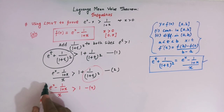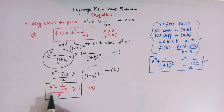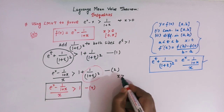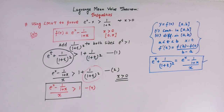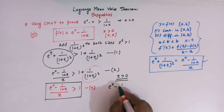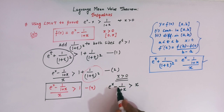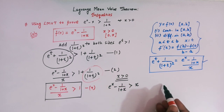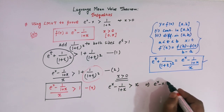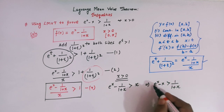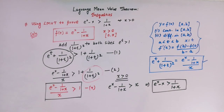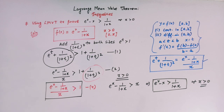We have arrived at this important inequality. Since x > 0, it is a positive quantity, so we can multiply both sides by x to get: e^x - 1/(1+x) > x. Transposing, we get e^x - x > 1/(1+x), which is the desired inequality for all x > 0. This is how, by the application of Lagrange's mean value theorem, we can prove these types of inequalities.